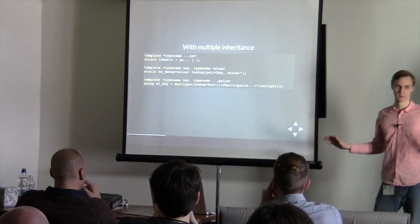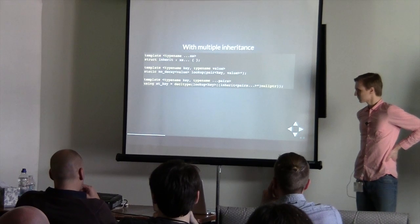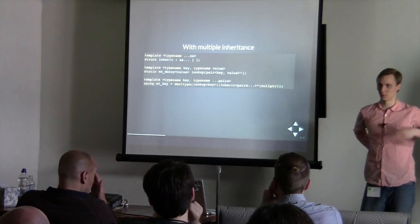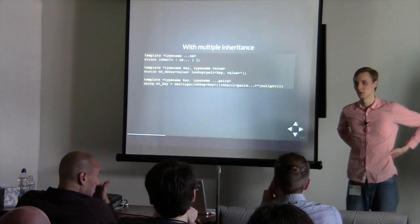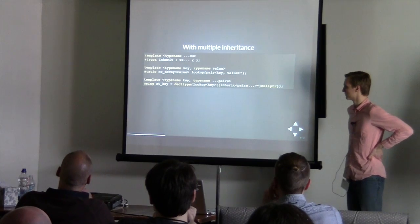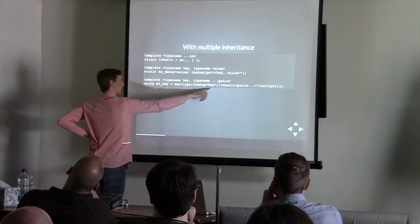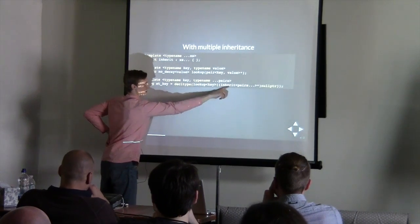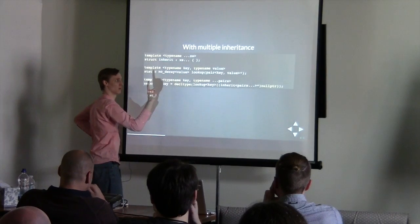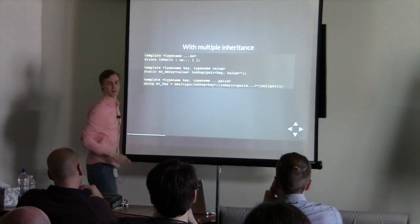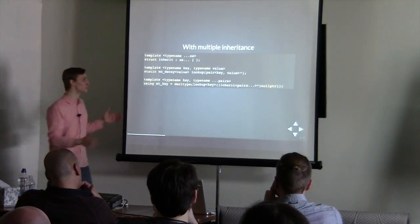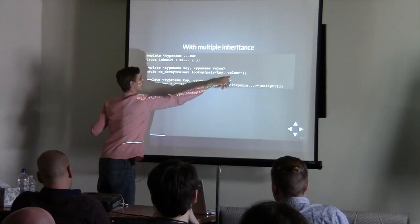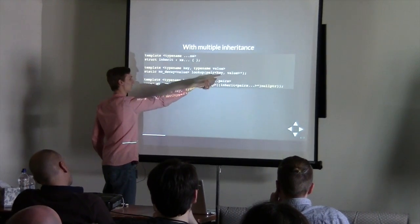Stare at it for a bit. Here I'm saying: this is the key I'm looking for — it's fixed. Now inner_it inherits from a single pair with that key associated to that value, otherwise you're breaking the contract of the map. Since this is fixed, it's going to match for the right pair, and then overload resolution gives you the value, and you return it. The pair is just a dummy empty struct used for pattern matching.